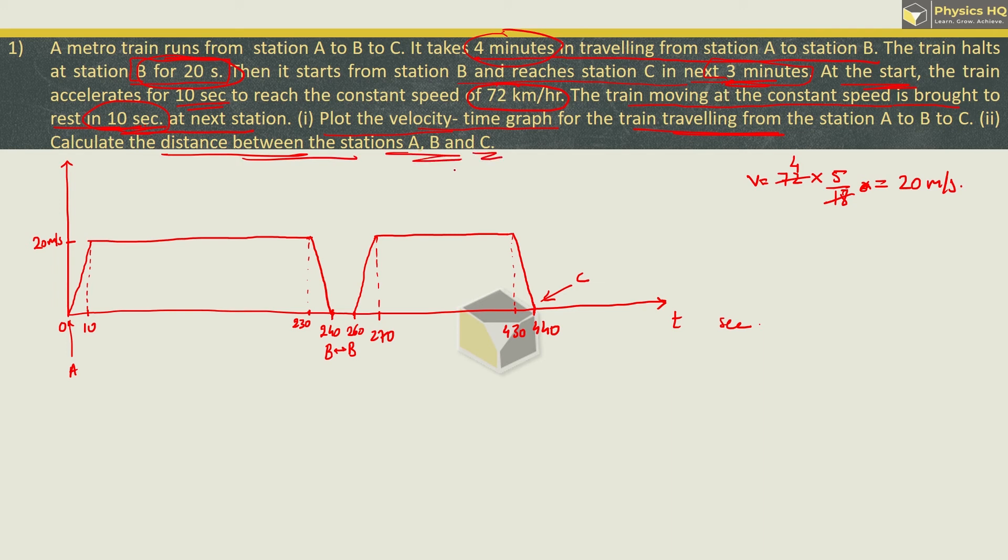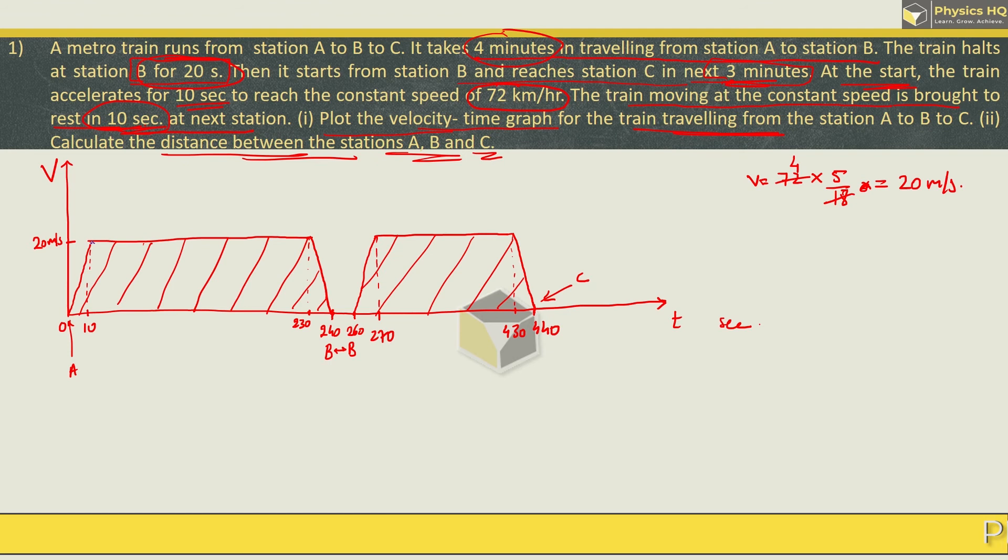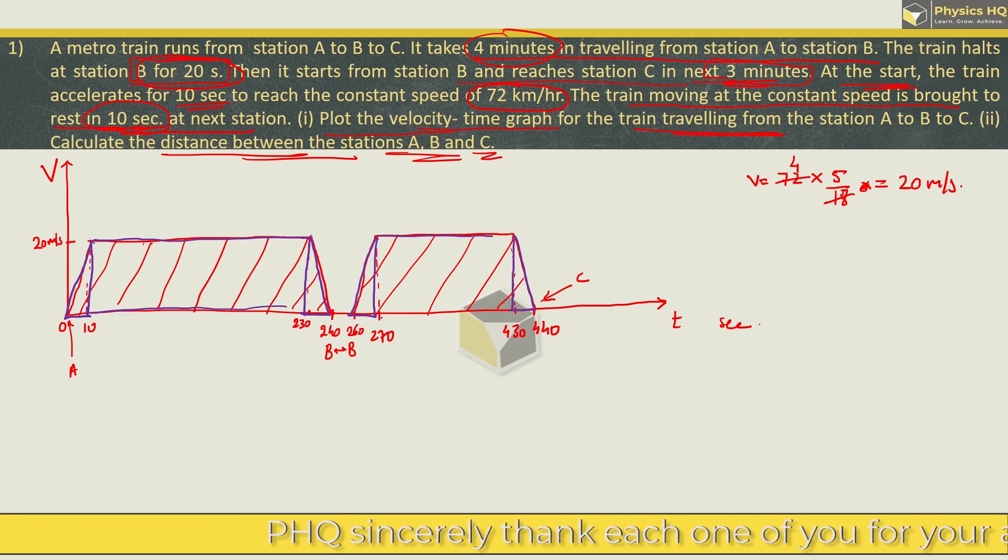Next question is calculate the distance between station A, B and C. We have discussed in the first part that if the velocity time curve, the velocity time graph which we have made, the area under this curve tells you the distance traveled by the train during this time period. For simplicity what we will do is we will divide this shape into right angle triangles. So we got total 4 triangles and this is a rectangle.